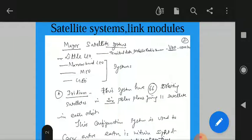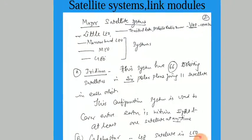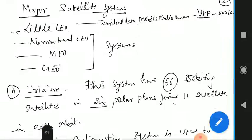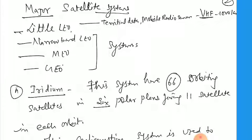The major satellite systems include Little LEO, which uses VHF and is approximately 1000 kilometers from the earth surface, and Narrow Band LEO, MEO, and GEO systems. The Iridium system has 66 orbiting satellites — this is a Little LEO system very close to the surface. This system has 66 orbiting satellites in 6 polar planes, giving 11 satellites on each orbit, and they have 6 polar orbital planes overall.